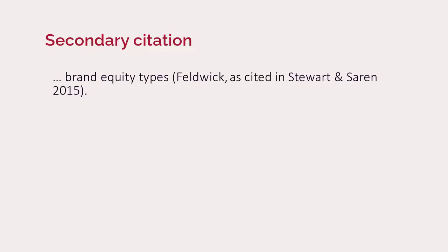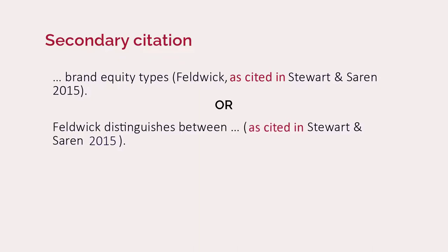It's called a secondary citation. To do this, we cite Feldwick in text but add the words 'as cited in' before the first author's name. We can do it like this or this. We only include the publication date of Stuart and Sarin's book and not the date of the article written by the secondary author, Feldwick.